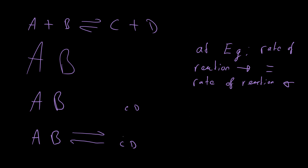This makes sense because at that point there is no net change in the amount of A, B, C, and D. It doesn't matter how long we leave the reaction - A and B will always be this amount and C and D will always be this amount. That's because as A and B convert into C and D, C and D is being reduced back to A and B at exactly the same rate, giving us no net change in reactants and products.